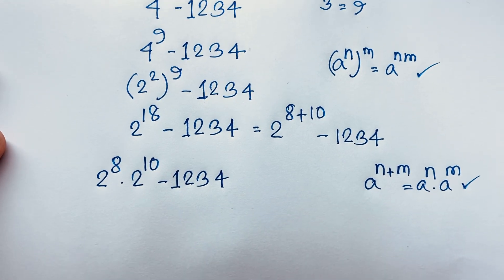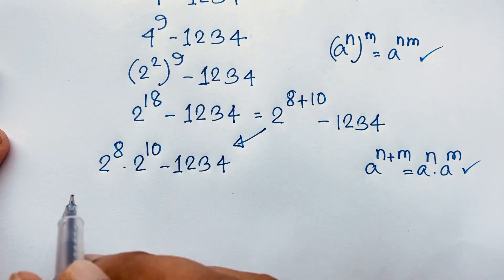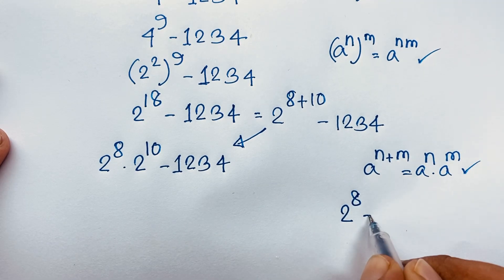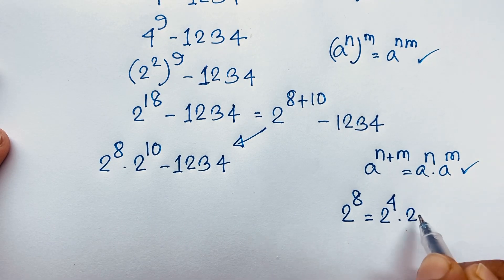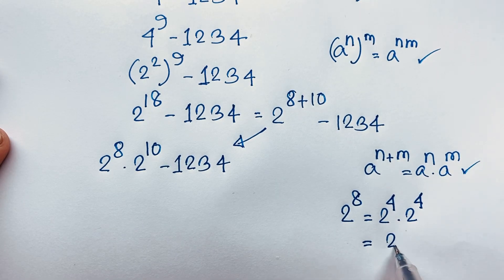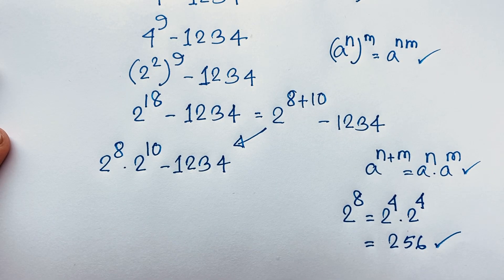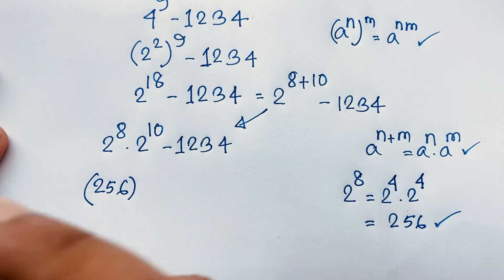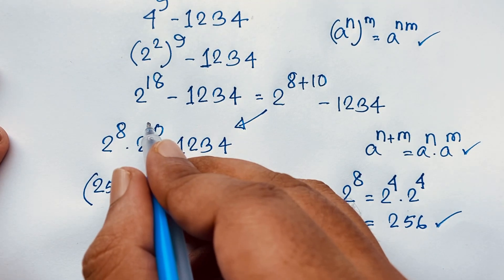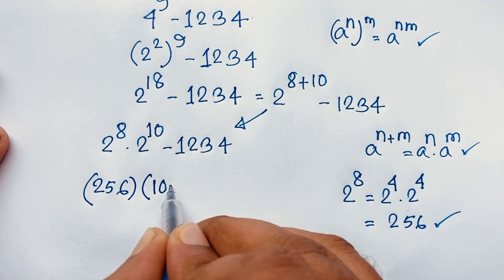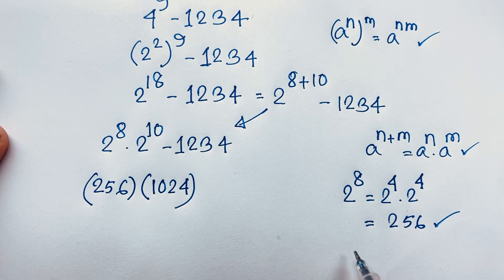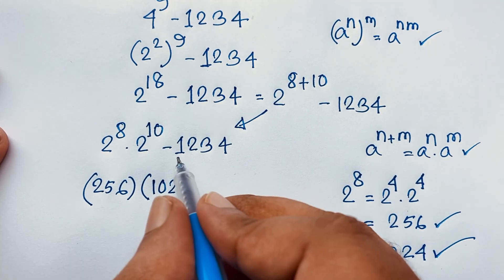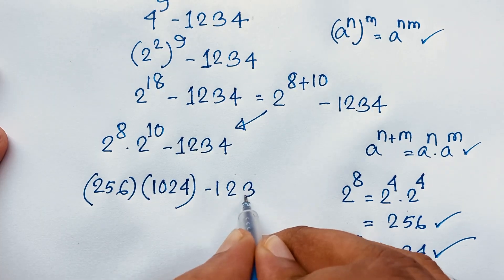Now, 2 to the power 8 equals what? We know 2 to the power 8 equals 2 to the power 4 times 2 to the power 4, which is 16 times 16, equals 256. And 2 to the power 10 — we know everybody knows — it equals 1024. Then here is minus 1234.